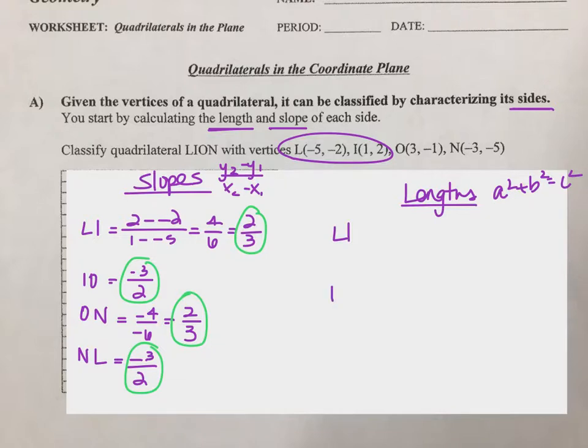LI, IO, ON, and NL. Now I want to be thinking about distance between the x coordinates. So how far apart are negative five and positive one? That's going to be six, so I'm going to do six squared. Six squared plus the distance between the two y values. Negative two and positive two are four apart, so plus four squared equals c squared.